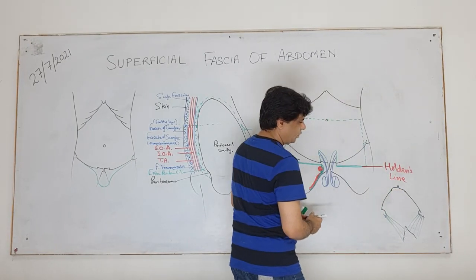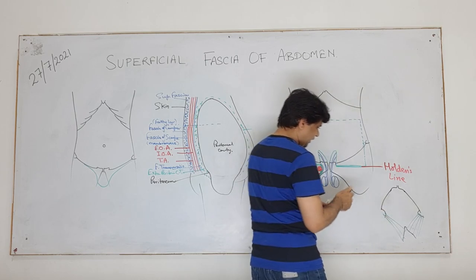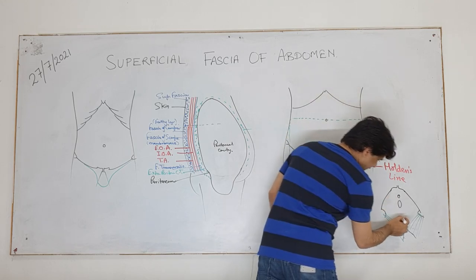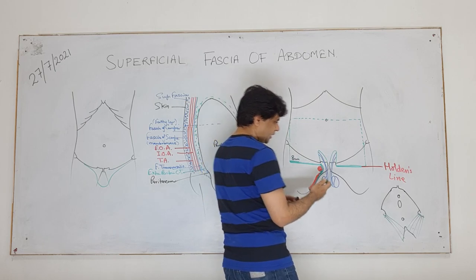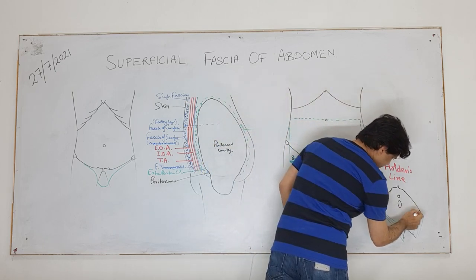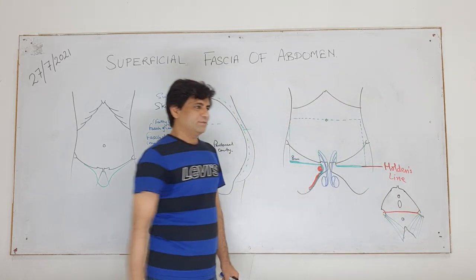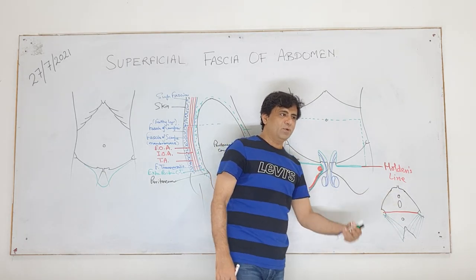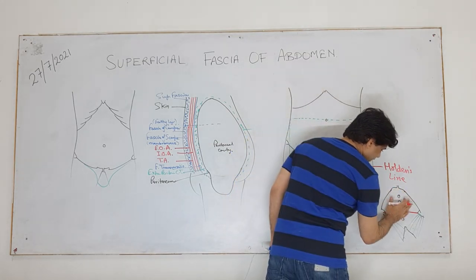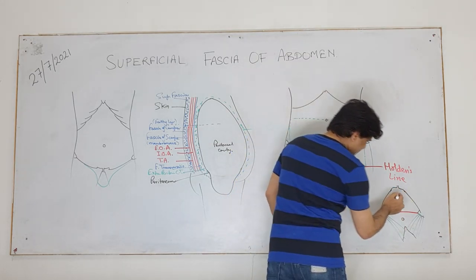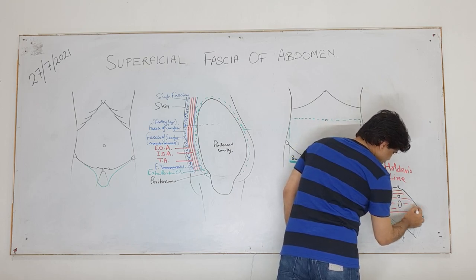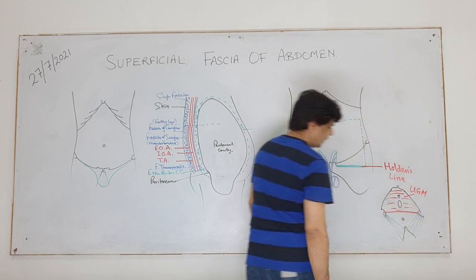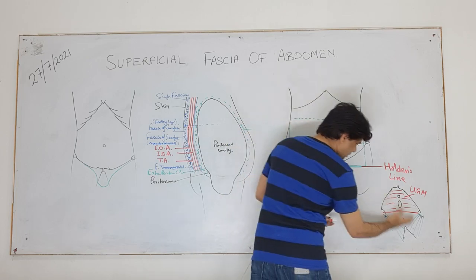The pelvic outlet has various openings - urethral opening and vaginal opening. There is a membrane which separates the structures below as the superficial perineal pouch. This membrane anteriorly is called the urogenital membrane. The posterior portion here is the perianal membrane.